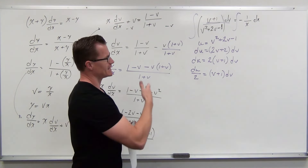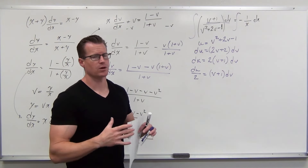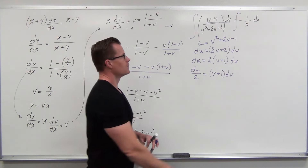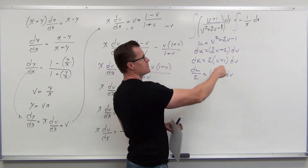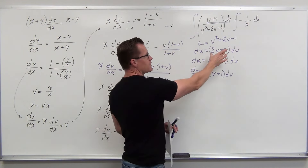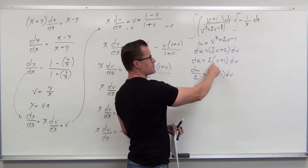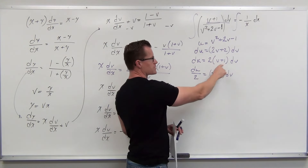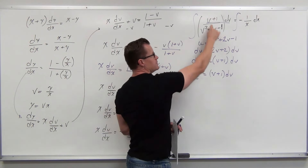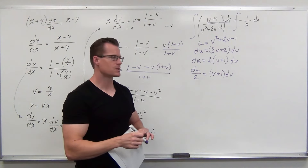We looked at the integral and thought it didn't look great, but trying a basic substitution works. Take u equal to the denominator, v² + 2v − 1. Then du = (2v + 2)dv = 2(v + 1)dv, so (v + 1)dv = du/2. That's exactly the numerator. So the integral becomes (1/u)(du/2), which is ½ ln|u|. On the right-hand side we get −ln|x| + C.